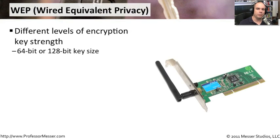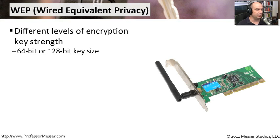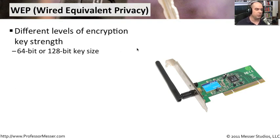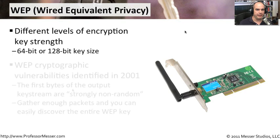WEP — Wired Equivalent Privacy — was introduced when 802.11 networking was introduced. This technology uses two different levels of encryption depending on where you were in the world: you could either have a 64-bit key or a 128-bit key.